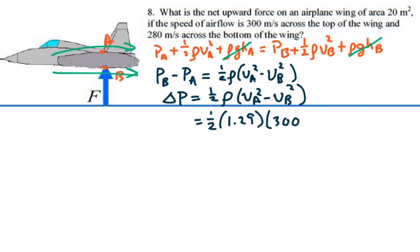300 meters per second squared minus 280 meters per second squared. And this is equal to 7,482 newtons per meter squared is the pressure difference between the bottom and the top of this plane.